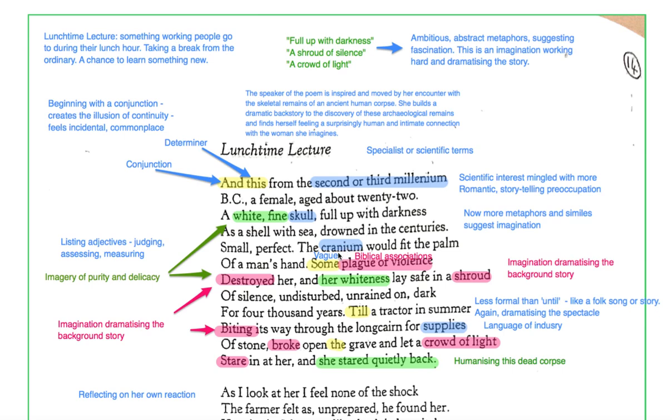Some plague or violence destroyed her, and her whiteness lay safe in a shroud of silence. I've highlighted some there. Some is an article, the definite article is the, this is a possible article, like a, but it's some. It just sounds a bit vague because she doesn't know what the plague or violence was that destroyed her. The point is about this word, this choice of word, she's imagining it, she's speculating. And only speculating vaguely, because that's the best she can do. So we can kind of see the effort of her speculation there.